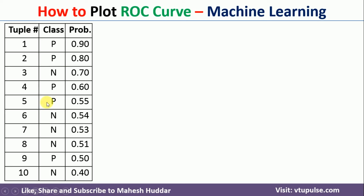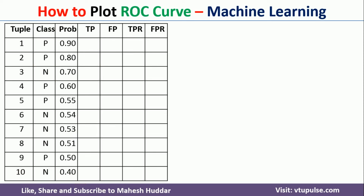We have been given a dataset with 10 different thresholds, where we have been given two things: one is the actual class and another one is the probability of classification. Given this particular data, we need to calculate TPR and FPR.